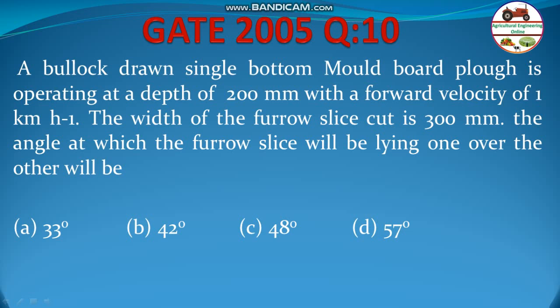A bullock drawn single bottom moldboard plough is operating at a depth of 200 mm with a forward velocity of 1 km per hour. The width of the furrow slice cut is 300 mm. The angle at which the furrow slice will be lying one over the other will be: 33 degree, 42 degree, 48 degree, and 57 degree.